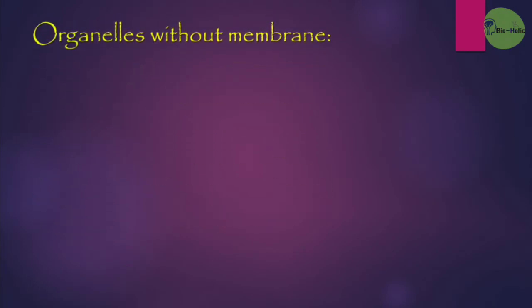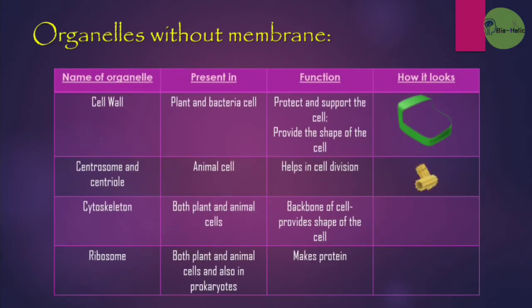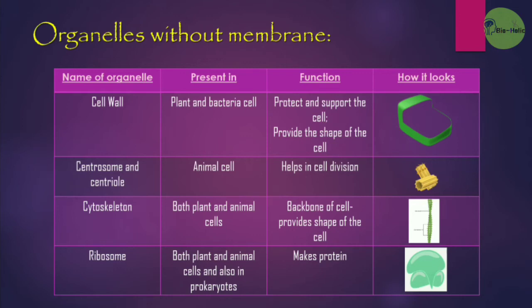Now let's zoom into the organelles without membrane. First is the cell wall, present in plant and bacterial cells and absent in animal cells; its function is to protect, support, and provide shape to the cell. Second is the centrosome and centriole, present only in animal cells and important for cell division. Third is the cytoskeleton, present in both plant and animal cells, functioning as the backbone and providing shape. Last is the ribosome, present in both plant and animal cells and also in prokaryotes, whose only function is to make protein.